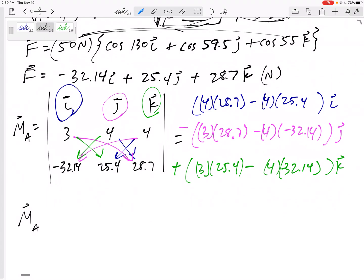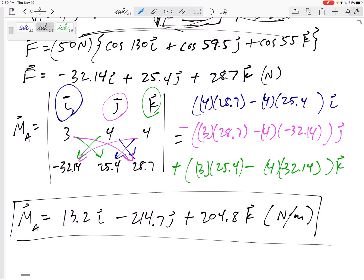Alright. So my moment about point A is, and here, if you round, you're going to get a little bit, there's going to be kind of a range of numbers depending on how you rounded and how I rounded. So, but I've got positive 13.2 in the i minus 214.7 in the j plus 204.8 in the k. I need units. I like to write my units out here. Units are Newton meters, not Newton slash meters. I would take off a point if you said Newton divided by meters. It's Newton times meters. So there's my moment about point A for this type of, for problem number two on this final exam.